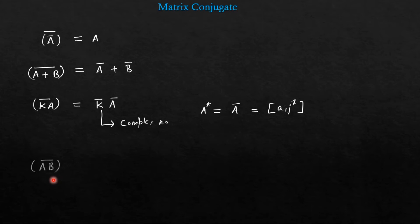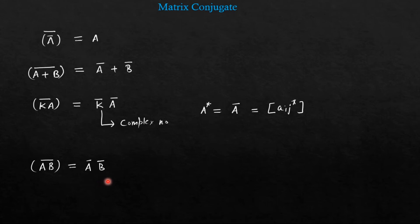Now, if you take the conjugate of AB bar, you will get A bar into B bar. Here the order of multiplication will not change. Why? Because in case of transpose, the order of the matrix gets changed — if the order of the matrix is M cross N, then after transpose the order becomes N cross M. But in case of conjugate, the order remains the same. Hence, the sequence of matrix multiplication remains the same in case of conjugate.